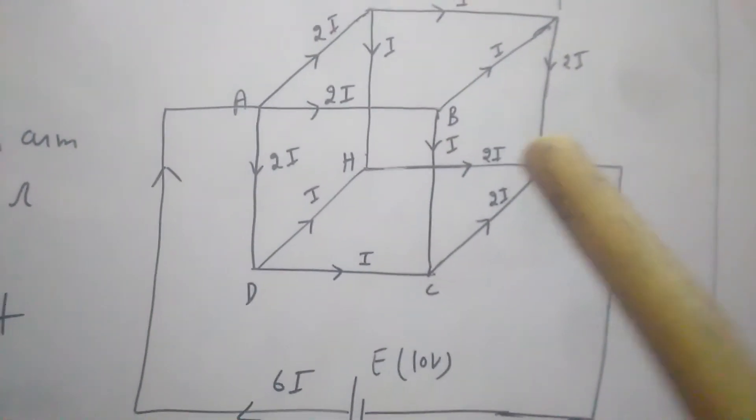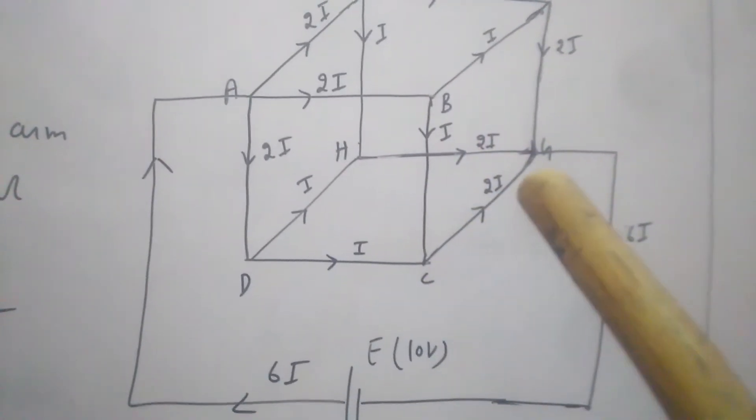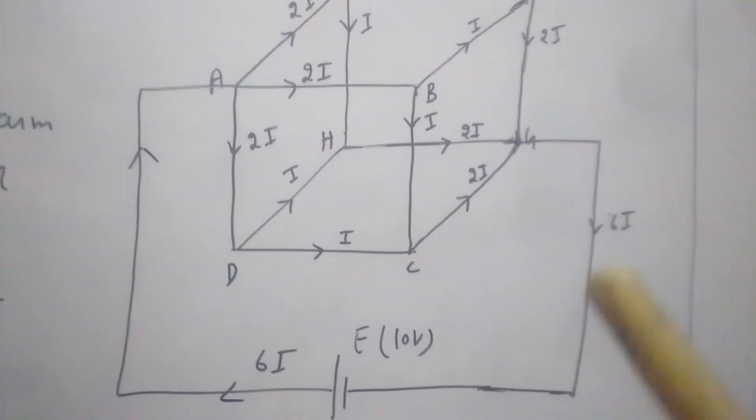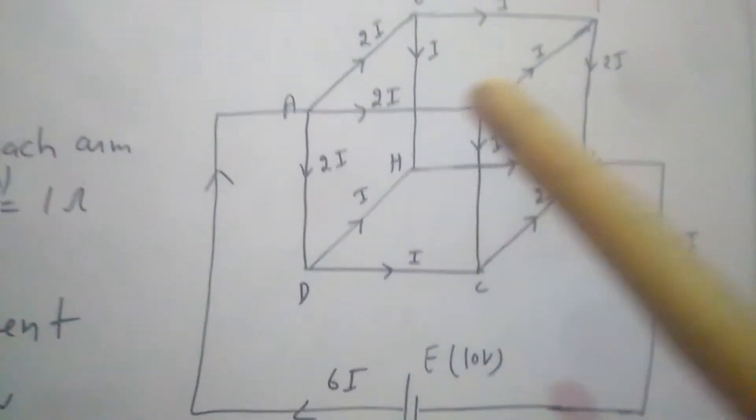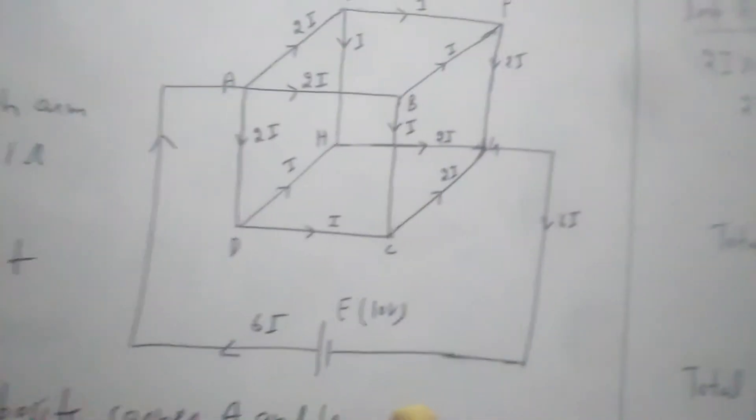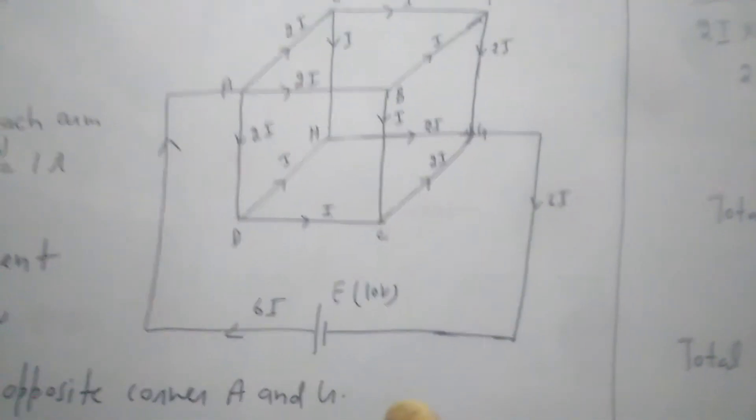At point G, 2i current, 2i current, and 2i current - all three add up to give 6i current flowing this way through the cell. So this is the complete circuit diagram.